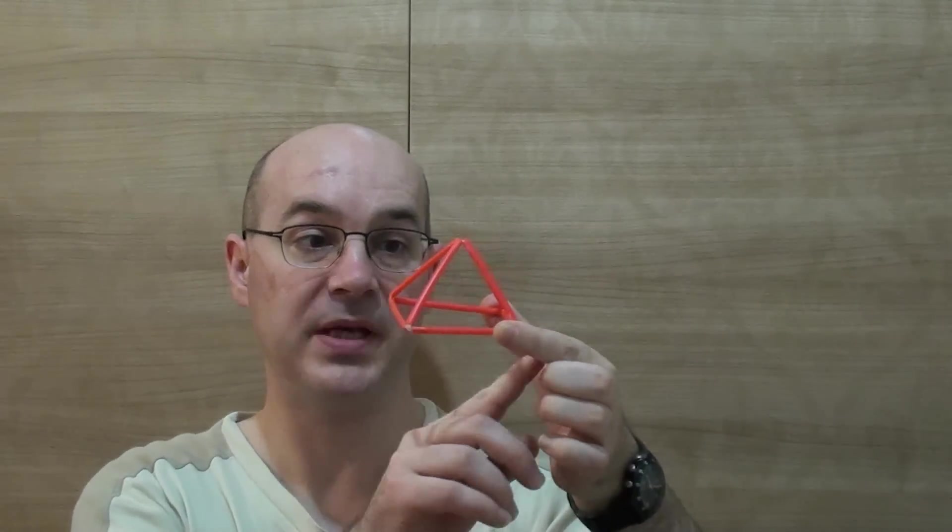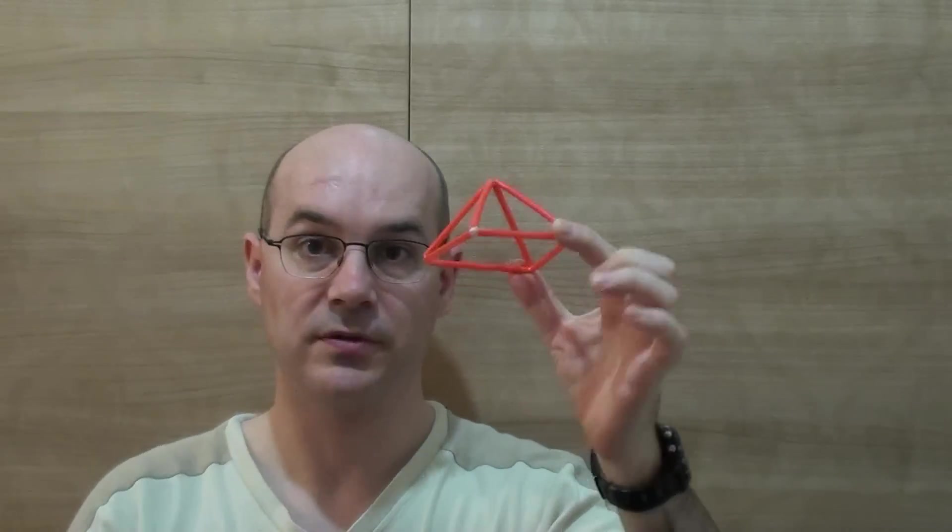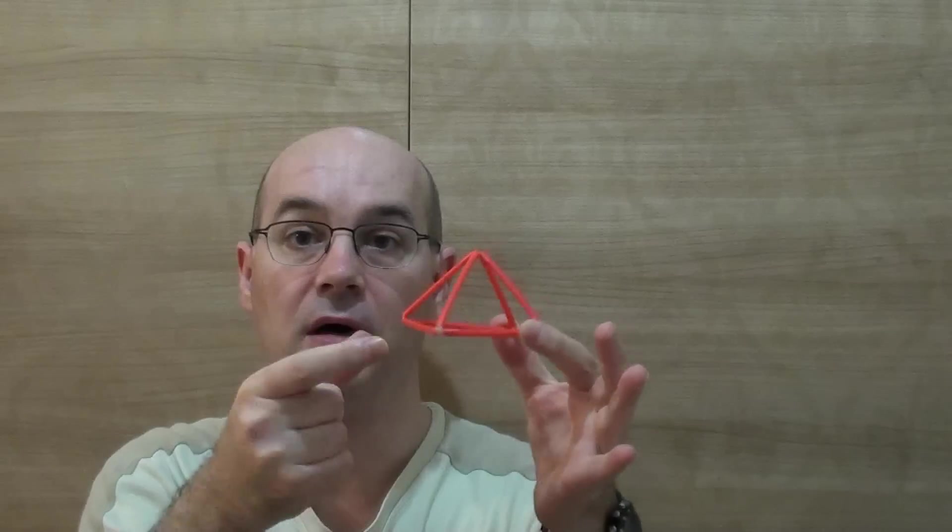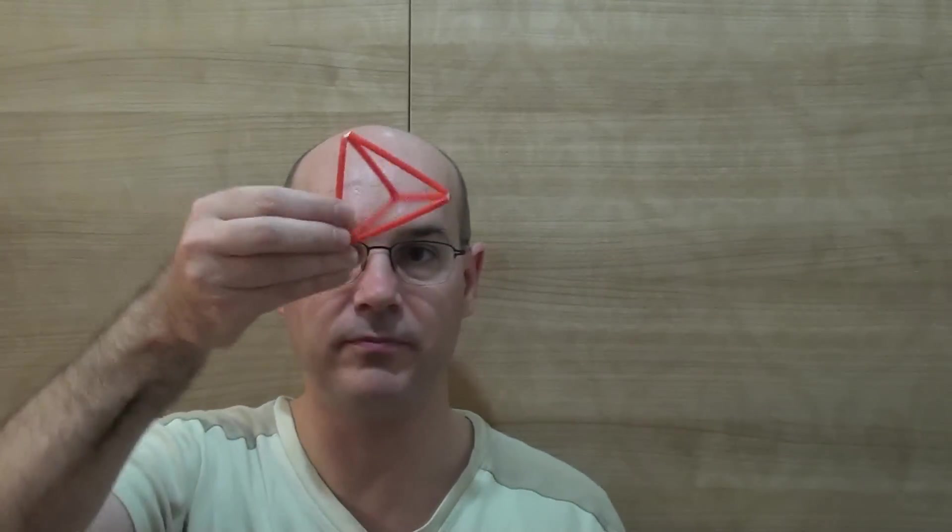Here's a pyramid with the base as a square and of course it's a pyramid, a normal pyramid, except that all the lengths are the same. And here is another pyramid with a triangle base and also all the lengths are the same, which makes it a regular tetrahedron.